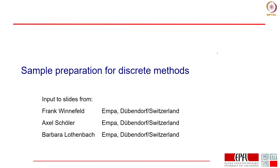Those two are the continuous methods. When we look at discrete methods, discrete means that we have to make a sample and then at individual times stop the hydration and do the complete analysis. Here sample preparation is very important — there is a whole chapter on this in the book, and I would like to thank some of the authors of the book who helped prepare these slides.